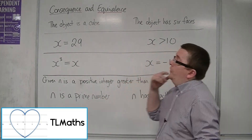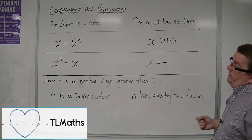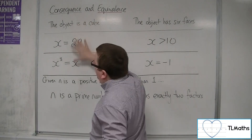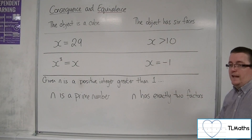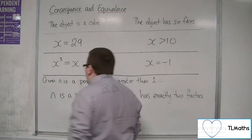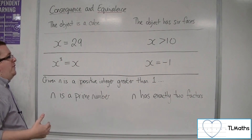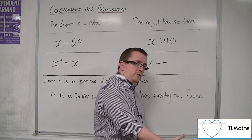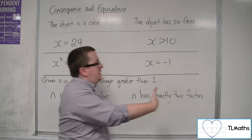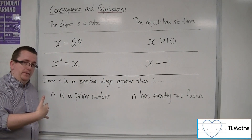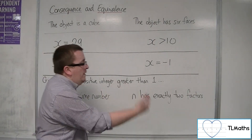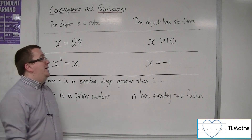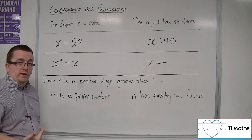Let's look at some examples on logical consequence and equivalence. We have some statements on the left-hand side and some statements on the right-hand side. We need to determine whether the left-hand side implies the right-hand side, and whether the right-hand side implies the left-hand side. If we just have one or the other, then we have logical consequence, and if it works both ways, we have logical equivalence.